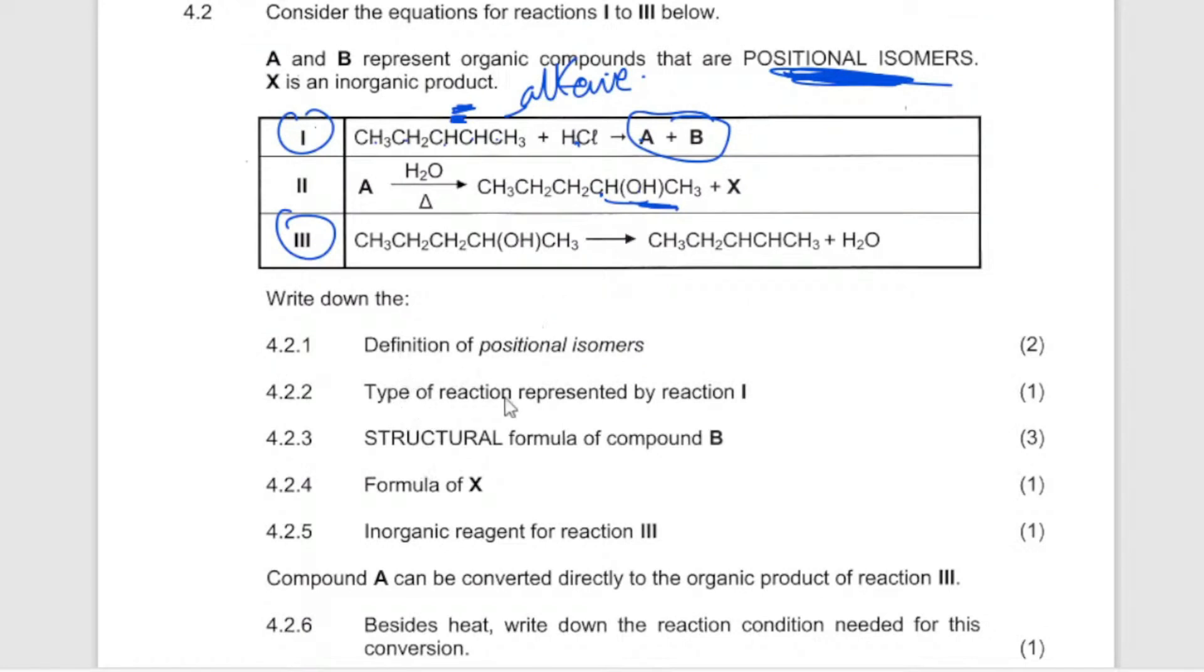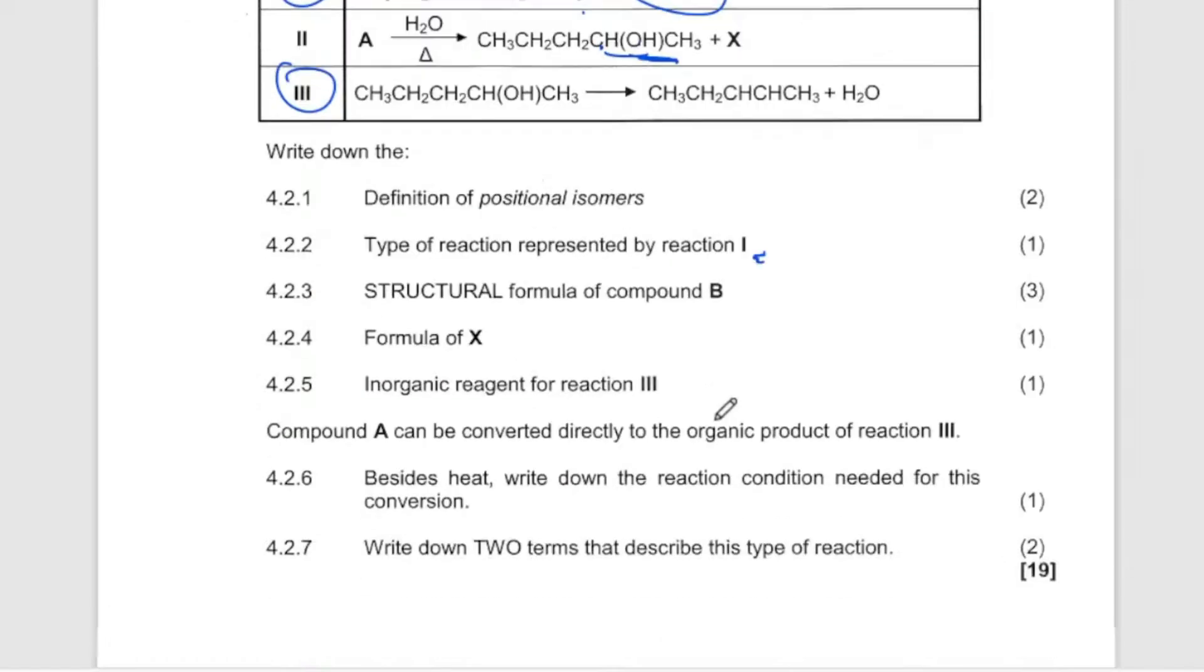Now they are saying write down the reaction that takes place by 1. That is 1, because this, I'm adding this. So it's going to be hydrohalogenation. It would be additional reaction or hydrohalogenation. Both answers could be correct because they are not specific.